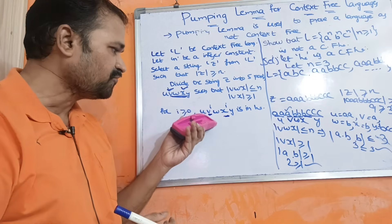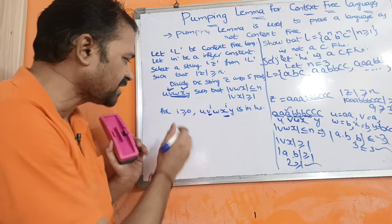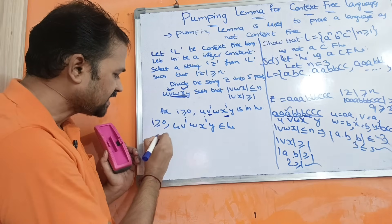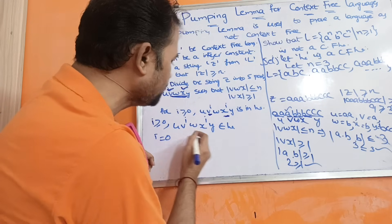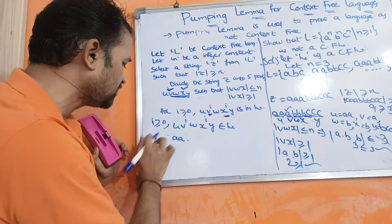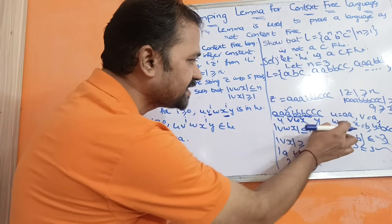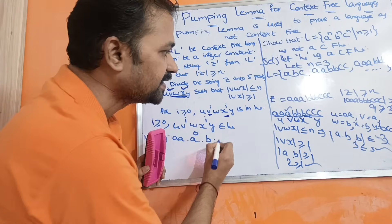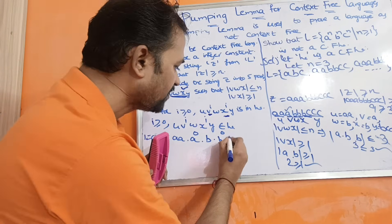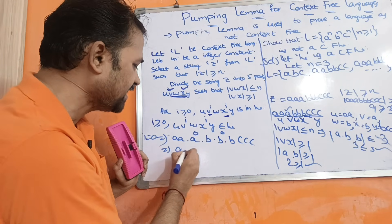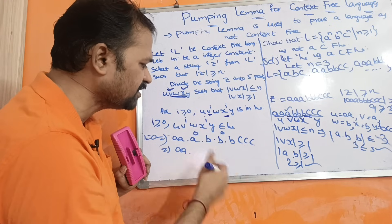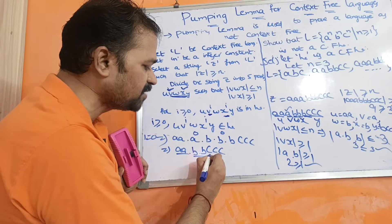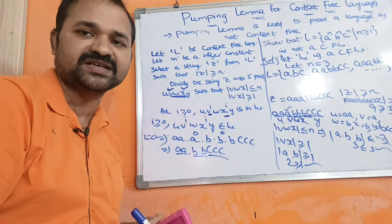Now we check: for i ≥ 0, u v^i w x^i y ∈ L. Let i = 0. Then u = aa, v^0 = ε, w = b, x^0 = ε, y = bbbccc. So the resulting string is aa · ε · b · ε · bbbccc = aabbbbccc — that is double a, double b... wait, more precisely we get aa and then b and bbbccc giving us aabbbccc, which does not have equal counts of a, b, and c.